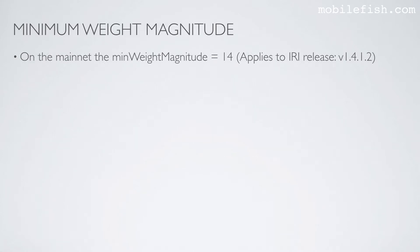On the main net, the minimum weight magnitude is set to 14. This applies to the IOTA reference implementation release version 1.4.1.2. On the testnet, the minimum weight magnitude is set to 9. This applies to the IOTA reference implementation release version testnet version 1.4.1.2.